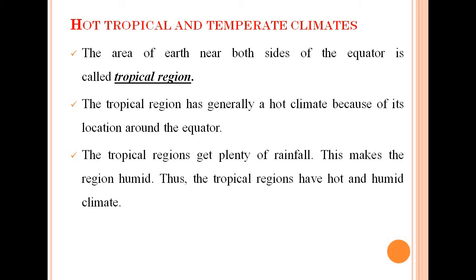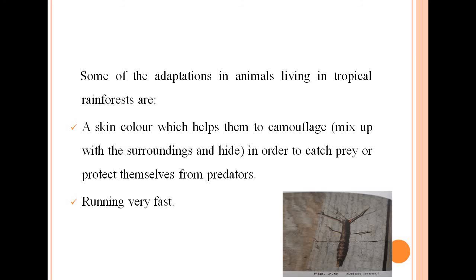The area of the earth near both sides of the equator is called the tropical region. Areas lying close to the equator are very warm, so the tropical region has a hot climate due to its location. The tropical region also gets plenty of rainfall, making the region humid. Animals living in tropical rainforests must adapt to this hot and humid climate. These animals induce faster evaporation through active sweating, panting, and licking.